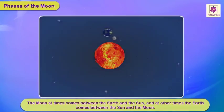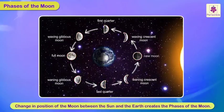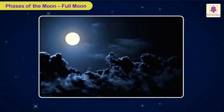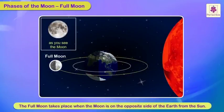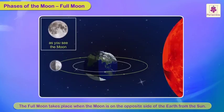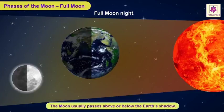This change in position of the Moon between the Sun and the Earth creates the phases of the Moon. Full Moon: The full moon takes place when the Moon is on the opposite side of the Earth from the Sun. The Moon usually passes above or below the Earth's shadow.